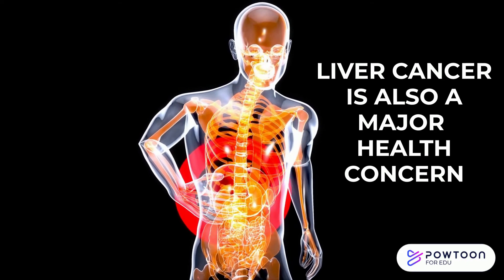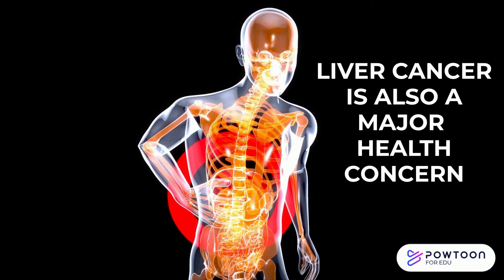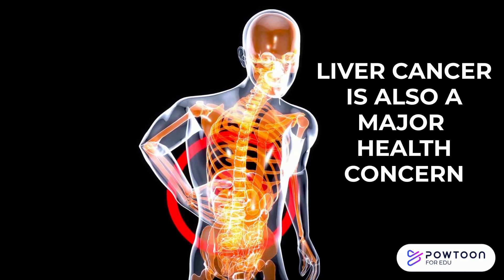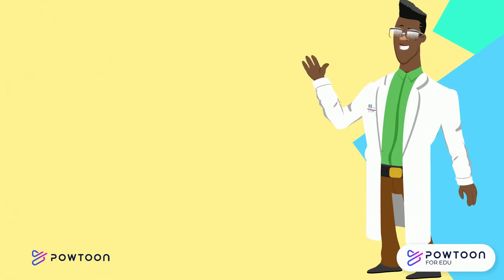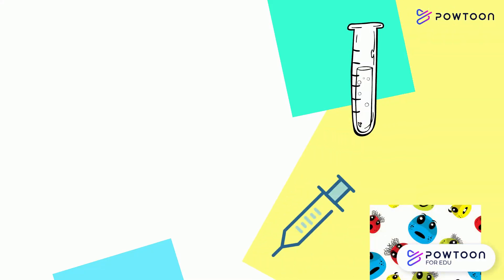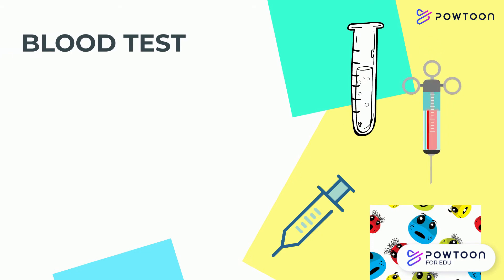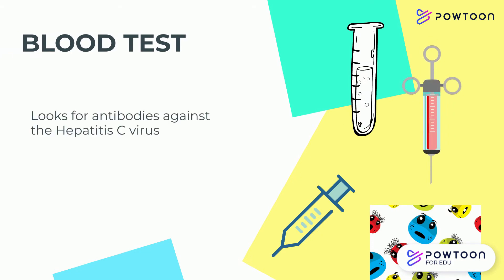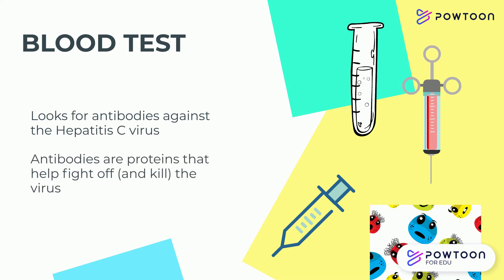Liver cancer is also a major concern for those infected with hepatitis C. So how do you get tested? Just like many other diseases, a blood test is conducted. Lab technicians will look for antibodies against the hepatitis C virus to see if an individual has been infected before or is currently infected. Antibodies are proteins that help fight off the infection.